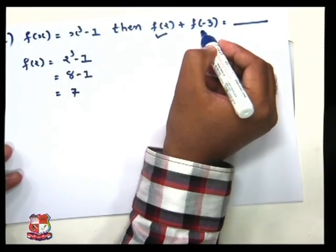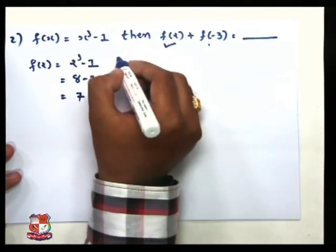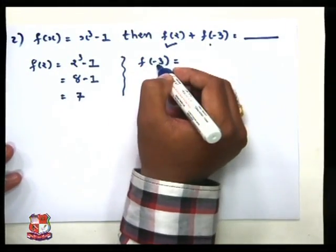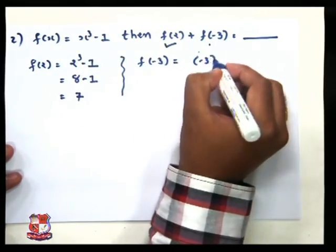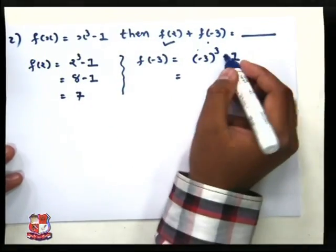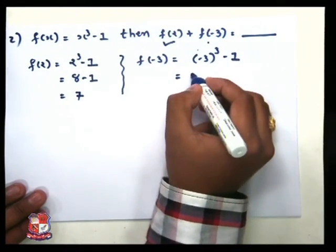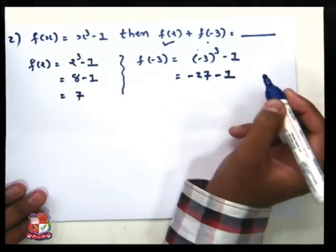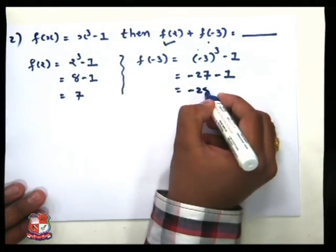Now we want to find the second part, f of minus 3. f of minus 3 means we replace x by minus 3, so that is minus 3 cubed minus 1. Since cube is an odd power, the result is minus 27 minus 1, which equals minus 28.